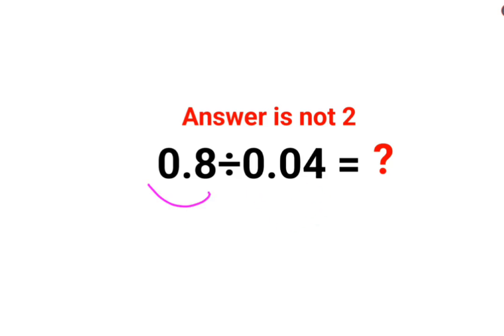Now this looks very easy, right? But yet people make a mistake. So basically we have 0.8 over 0.04.